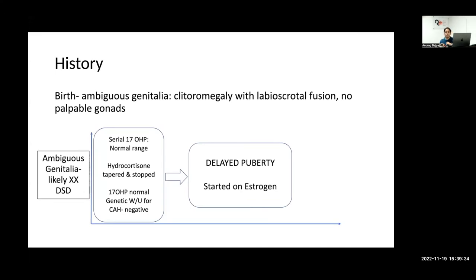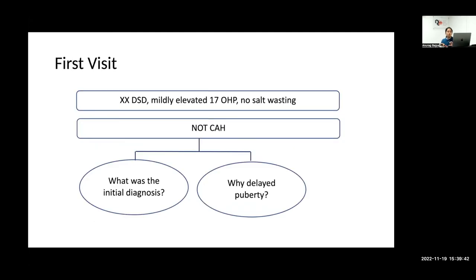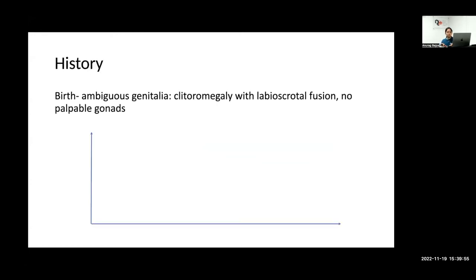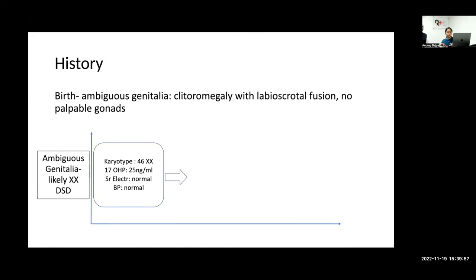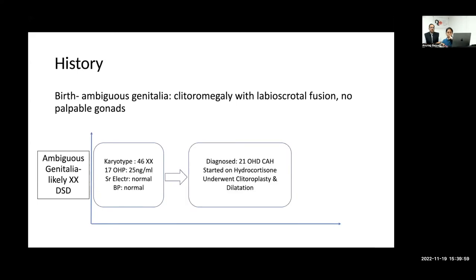The practicing clinician tapered hydrocortisone and advised a genetic workup which was negative for CAH. Hydrocortisone was gradually tapered and stopped, and 17-OHP levels remained within the normal range — confirming this was definitely not CAH. Subsequently, as the child grew, she presented with delayed puberty, was found to have very low estrogen levels, and was started on estrogen with some breast development seen.